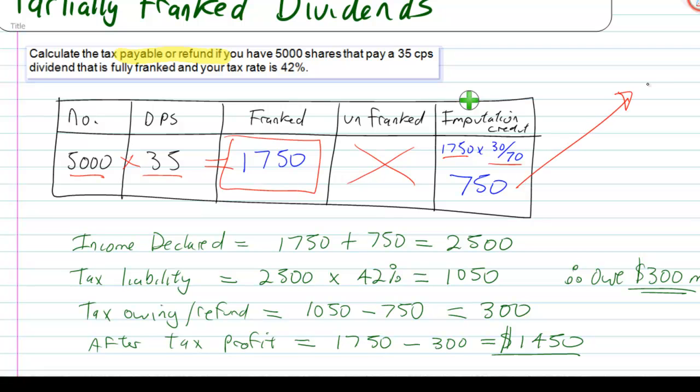Now this money here goes off to the tax man, so you don't even see it. But when you work out your income declared, the income declared is how much money you've actually, on paper, how much you've got. So that's the 1,750 plus the 750, which goes off to the tax man. So that means your income declared is 2,500 bucks.